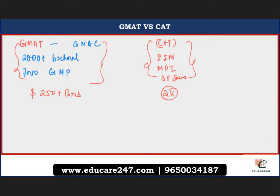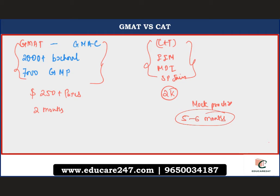GMAT is a relatively simpler examination — the maths is easy and the verbal section is manageable if you have a good grasp of English and logical thinking. Some students have scored well in GMAT with just two months of preparation. CAT, however, requires rigorous preparation — you need mock practice and strong root concepts. Generally, CAT requires a minimum of five to six months of preparation on average, though some students do it in three or four months.